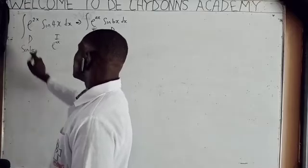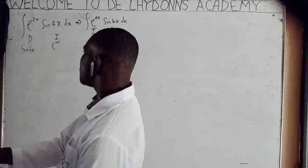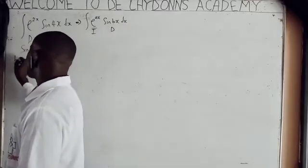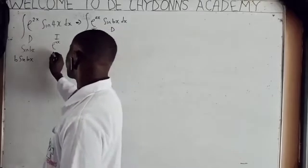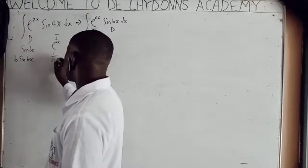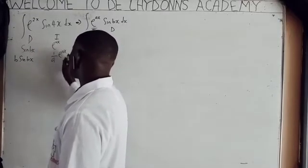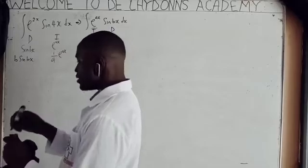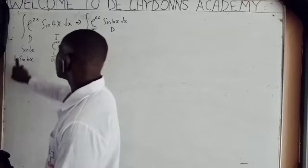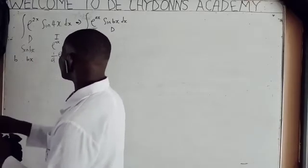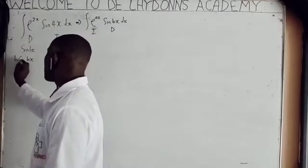D means differentiate. So when you differentiate sine bx, you will be getting b cosine bx. When you integrate exponential ax, you get 1 over a times exponential ax. Then you differentiate this again. When you differentiate sine bx, if you differentiate the bx you get b; if you differentiate sine, you get cosine — please note, cosine not sine.